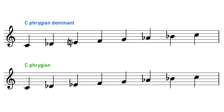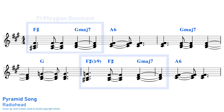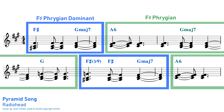Some songs switch between Phrygian Dominant and the regular Phrygian scale. The only difference between these two scales is the third — the Phrygian Dominant has a major third and the regular Phrygian scale has a minor third. So it's very easy to blend these just by switching which note we're using as the third. Pyramid Song by Radiohead switches between using F-sharp Phrygian Dominant and F-sharp Phrygian. Throughout the song, we get that trademark Phrygian sound of the flattened second degree, but the switch between the minor third of Phrygian and the major third of Phrygian Dominant introduces different shades of brightness and darkness to the music.